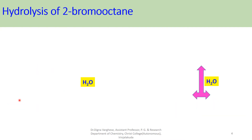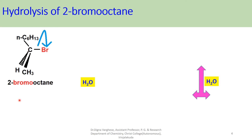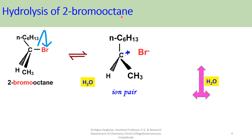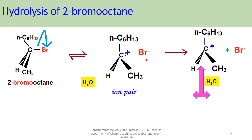Now we are discussing the hydrolysis of 2-bromo octane, specifically the stereochemical pathway of SN1 reaction of 2-bromo octane. When a nucleophile comes to this substrate, the electrons shift to the halide part, forming an ion pair: a carbocation part and a halide part. After this, the carbocation part is separated from the ion pair and the leaving group also separates. There is a possibility for the backside attack on the carbocation by the nucleophile.